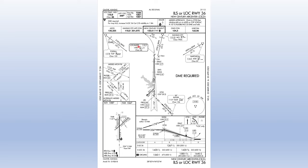On the main approach chart, the localizer is shown in a bolded box because it is the primary NAVAID associated with this approach. It tells us it is a localizer, gives us the frequency and identifier again, and spells out the identifier in Morse code. If you're flying an older aircraft that won't identify it digitally, you'll have to tune the radio and listen to the Morse code to make sure you're not listening to the wrong transmitter.